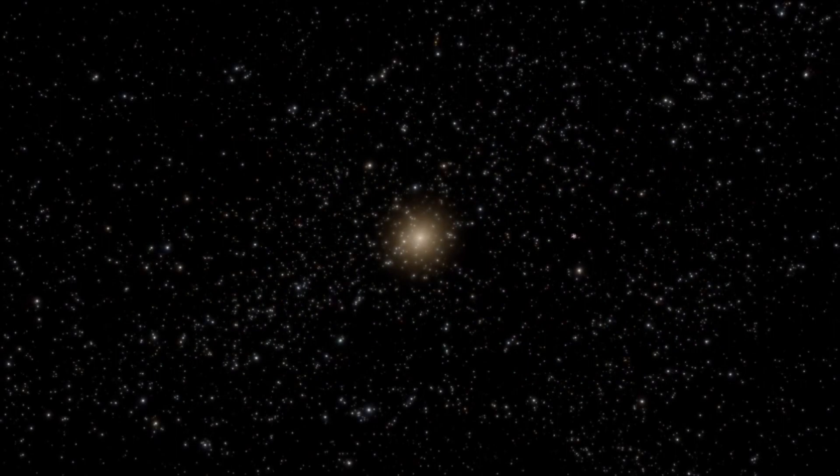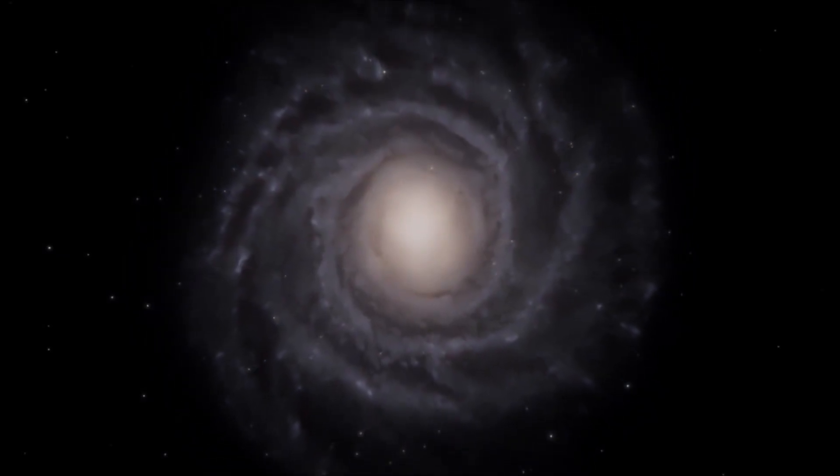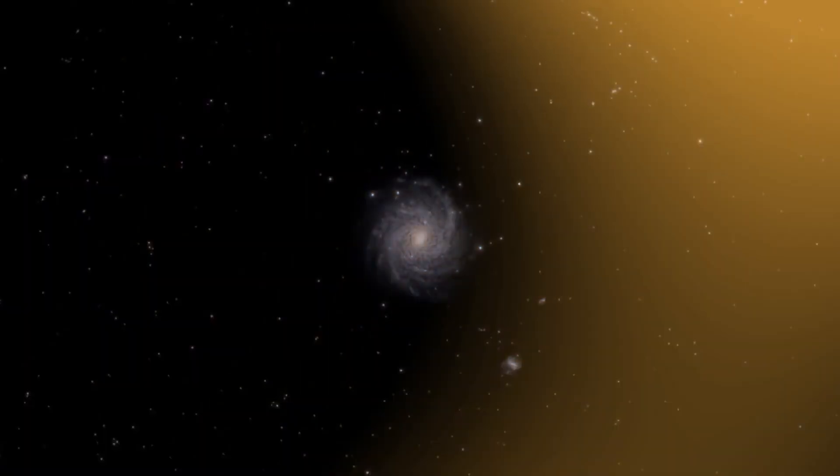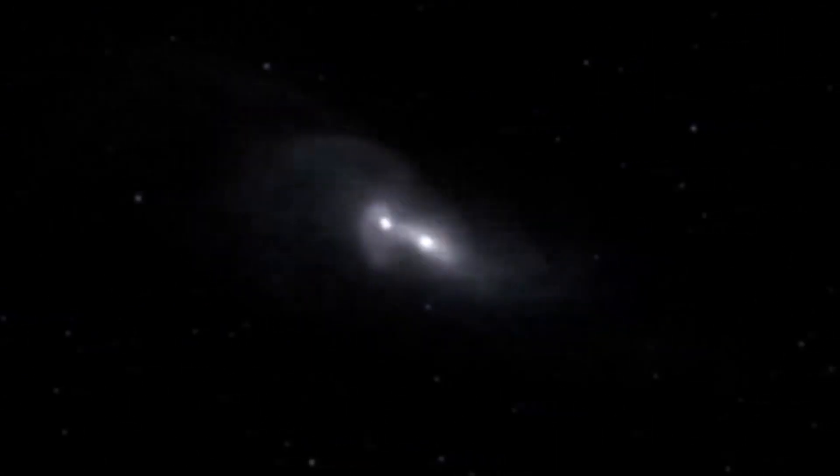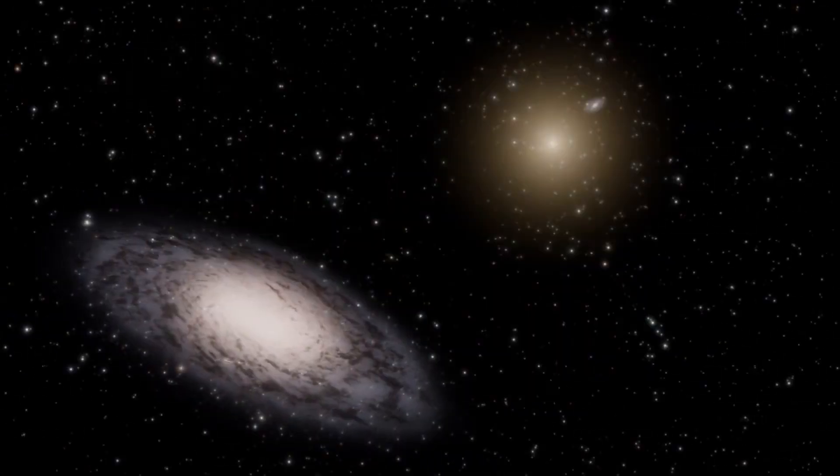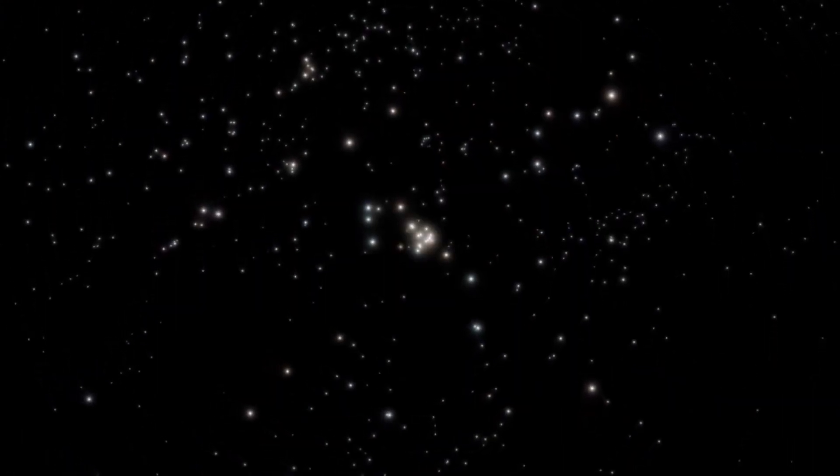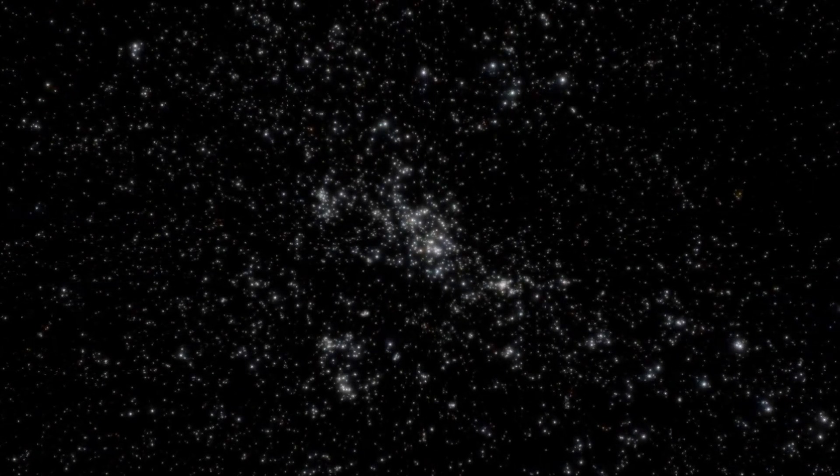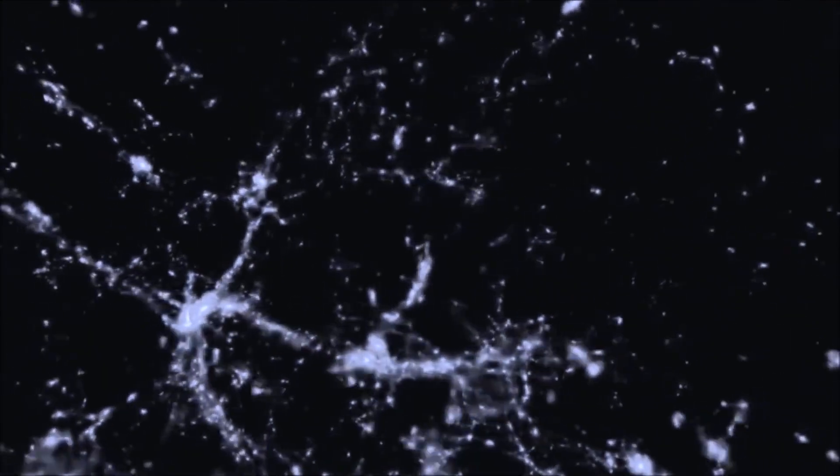The Great Attractor is an apparent gravitational anomaly in intergalactic space at the center of the local Laniakea supercluster, in which the Milky Way is located. The observed anomaly suggests a localized concentration of mass millions of times more massive than the Milky Way itself. However, it is obscured by our own Milky Way galactic plane, lying beneath the zone of avoidance.